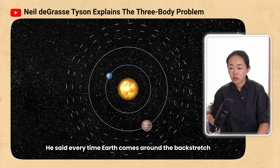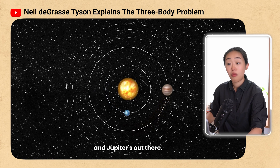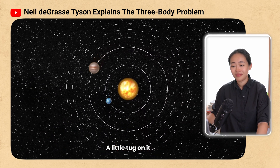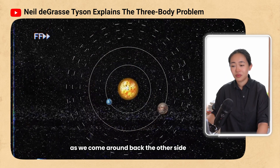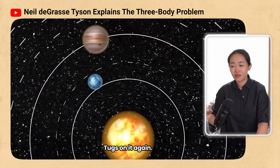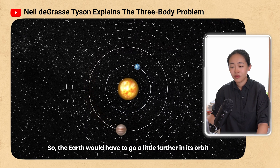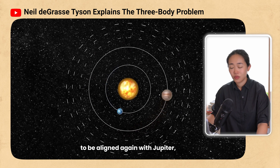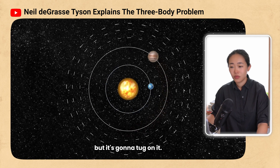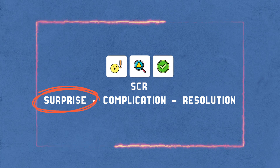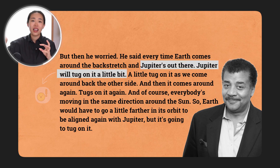Neil continues: "Every time earth comes around the back stretch and Jupiter is out there, Jupiter tugs on it a little bit — that's a lot of gravity. As we come around the back the other side, it tugs on it again. And of course everybody's moving in the same direction around the sun, so the earth would have to go a little farther in its orbit to align again with Jupiter — but it's going to tug on it." We're opening up a new surprise-complication-resolution loop. Everything is working out fine, except Jupiter is around and it's tugging on the earth.